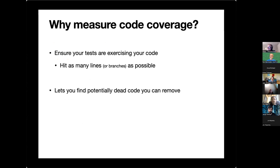Lines is not the only measure of coverage — there's branches and other things. You could measure code coverage to find code that you can remove if you're running it in production. Coverage in general is used for other things too, like fuzzing and automated testing, but that's maybe for a different talk.